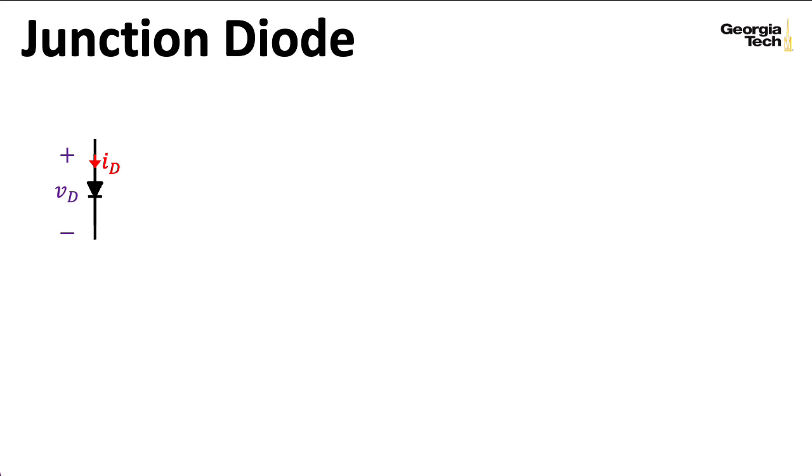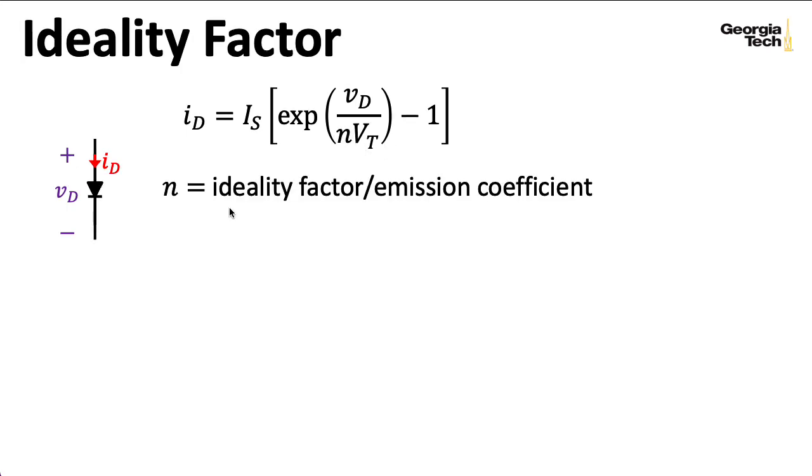The current through the diode will be modeled according to this exponential relationship in terms of the voltage. IS is a constant called the saturation current. And it's not actually very constant. It varies with temperature drastically. VT is called the thermovoltage. The main thing I want to talk about here is this constant N. N is called the ideality factor or the emission coefficient.